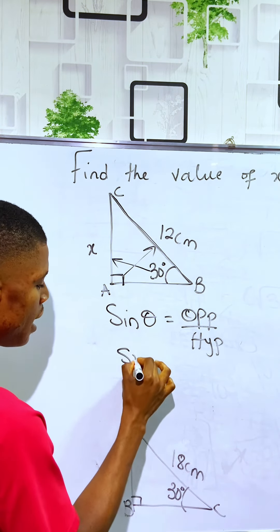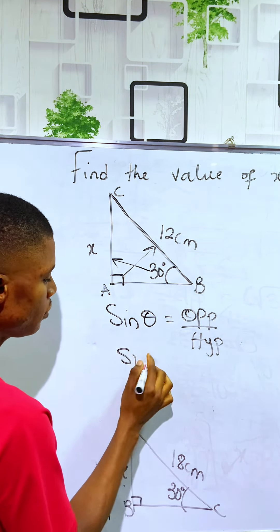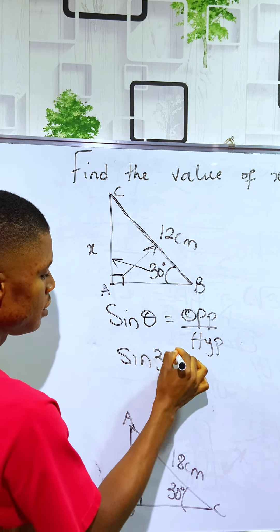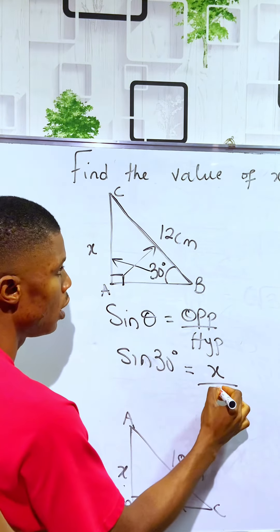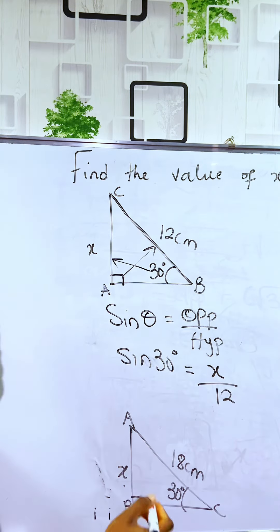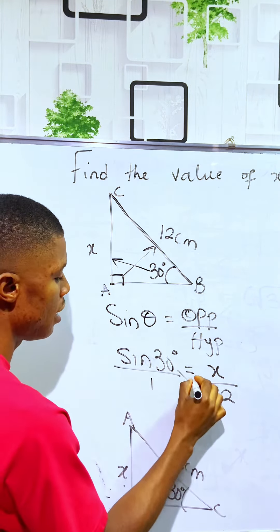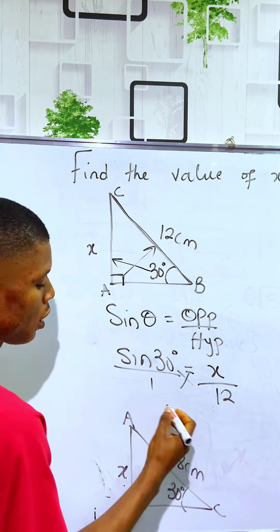We have sin 30° equals the opposite, which is x, over the hypotenuse, which is 12. So here we have to cross multiply.